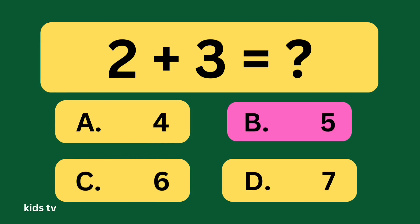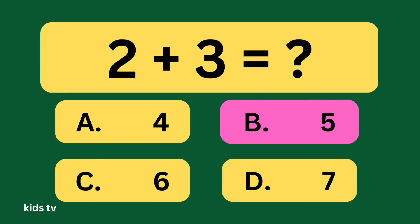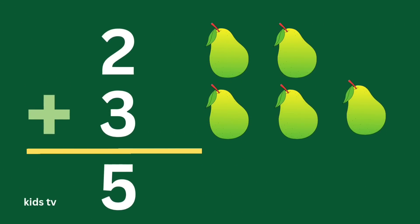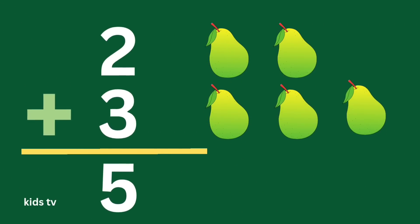The answer is B: 5. Let's count: 1, 2, 3, 4, 5. 2 plus 3 is equal 5.